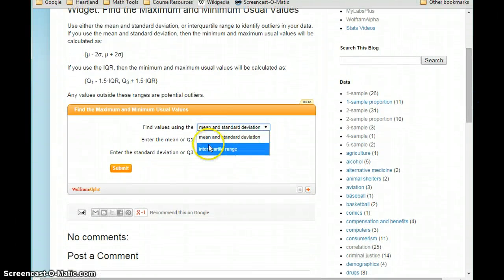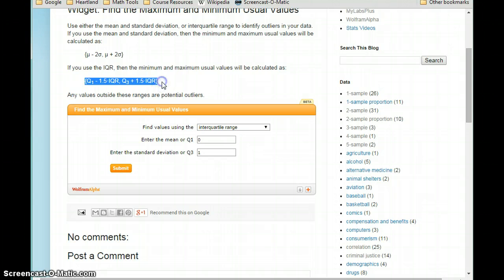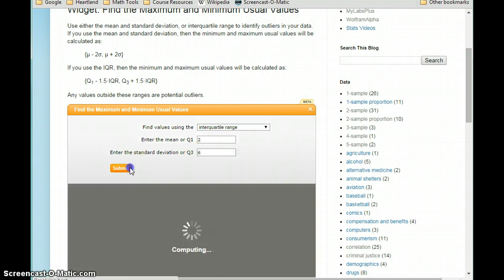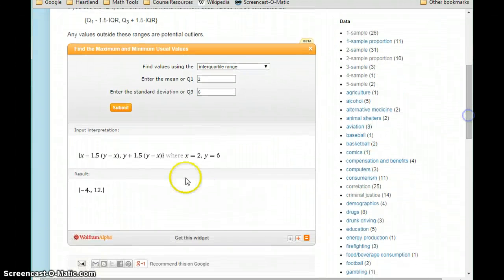We're going to switch this to find values using the interquartile range, and again up here it's showing us the formula that it's using to calculate both those minimum maximum values. So now we're going to enter Q1 and Q3 into these two boxes. So the value we came up with for Q1 in that example was 2, and for Q3 we came up with 6. Click submit, and this is going to generate that range of likely values. So in this case from negative 4 to 12.